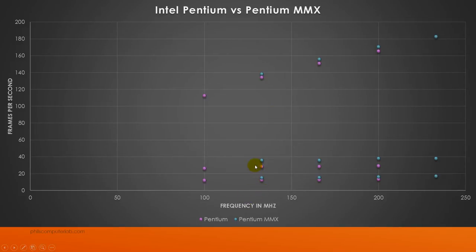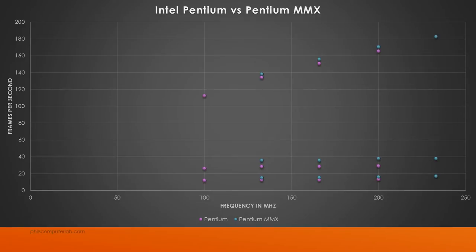Very important: the Pentium MMX is a lot faster with the caches turned off. So if you're trying to simulate a 386 or 486, one of the faster models, you're better off with the MMX — because you can simulate a fast 386 DX40 instead of maybe a 386/25 with the standard Pentium.